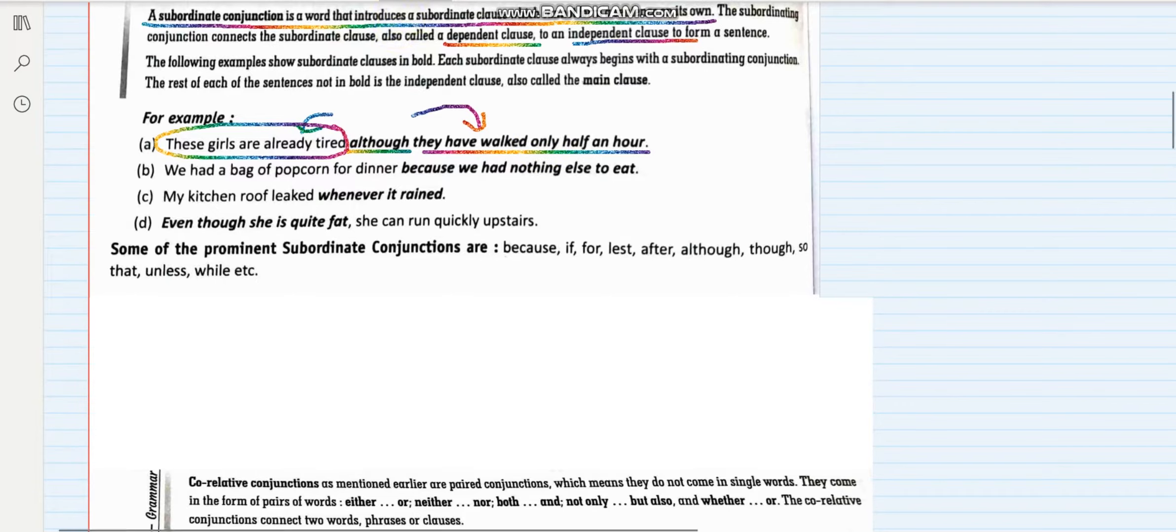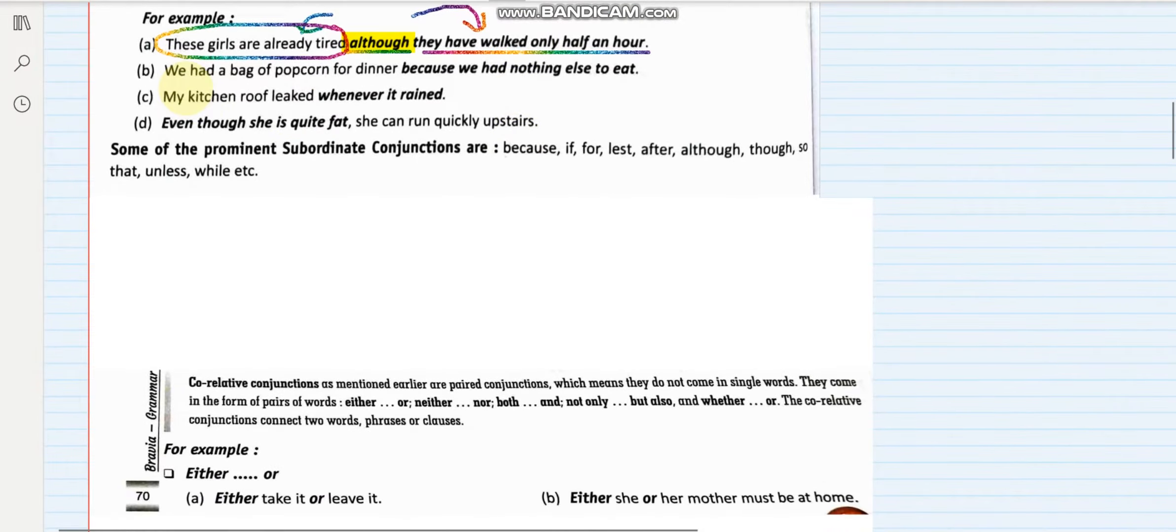So such conjunctions which join two clauses, one independent and one dependent, then it is called a subordinate conjunction. Let us take one more example.